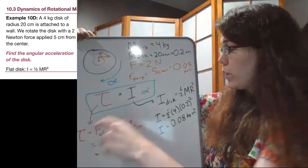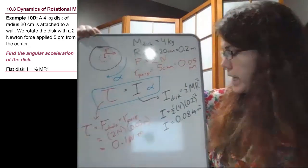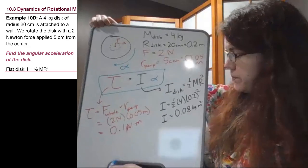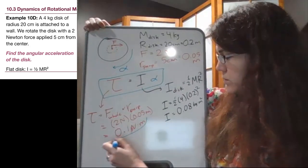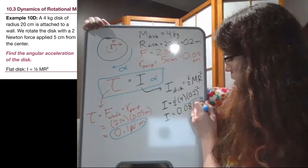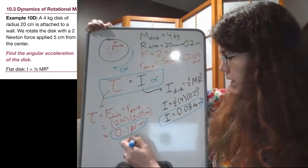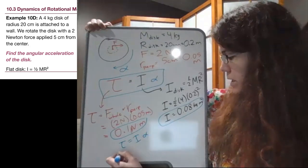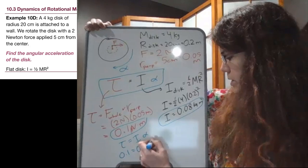All right, so if we go back to this equation then, we have that torque equals I alpha. If this is our torque and this is our moment of inertia I, then torque equals I alpha means we can take 0.1 equals 0.08 times alpha.